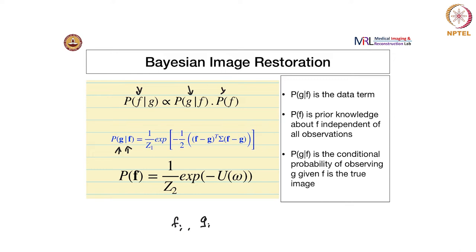The data term ensures that the F you estimate is not too far from G — it should be consistent with G. P(F) is the prior knowledge about F independent of the observation G; this is not something that G gives you — it is something you impose. For instance, F has to be smooth.